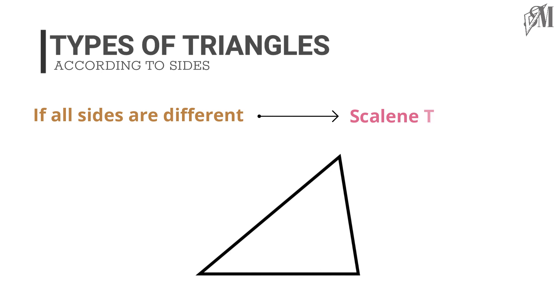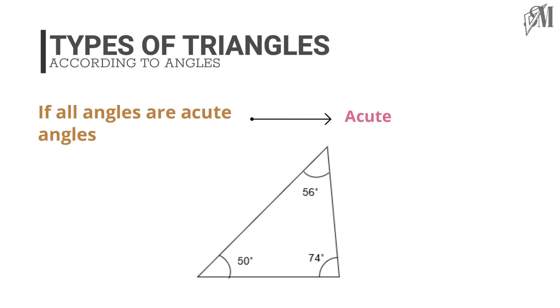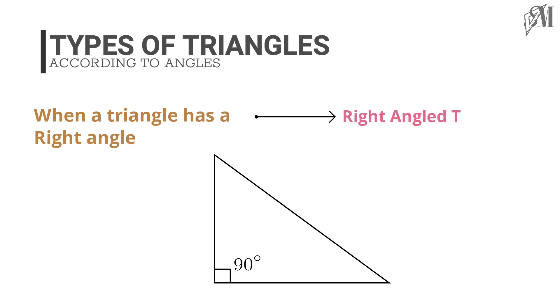Triangles also can be divided according to angles. If all the angles are acute angles it is an acute angle triangle. If one angle is obtuse it becomes an obtuse angle triangle. When a triangle has a right angle we call it a right angle triangle.